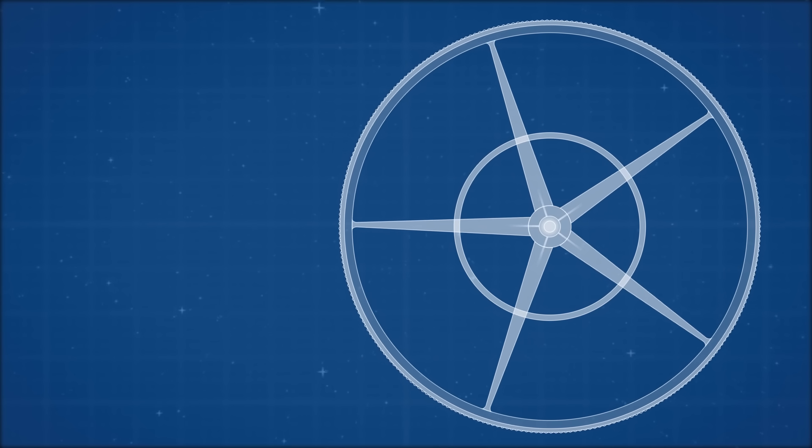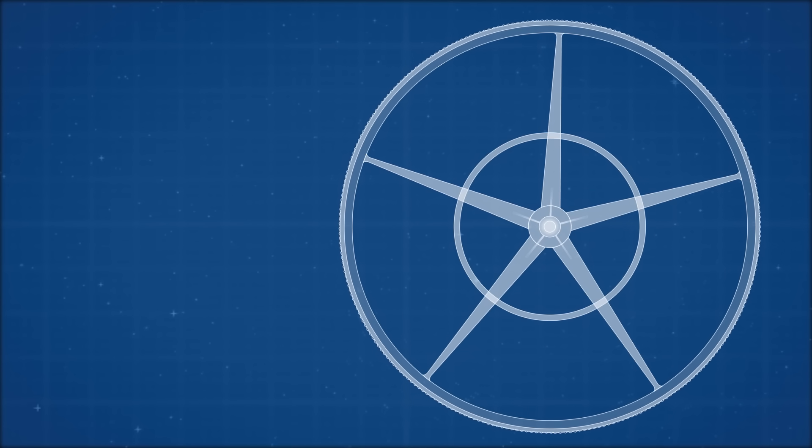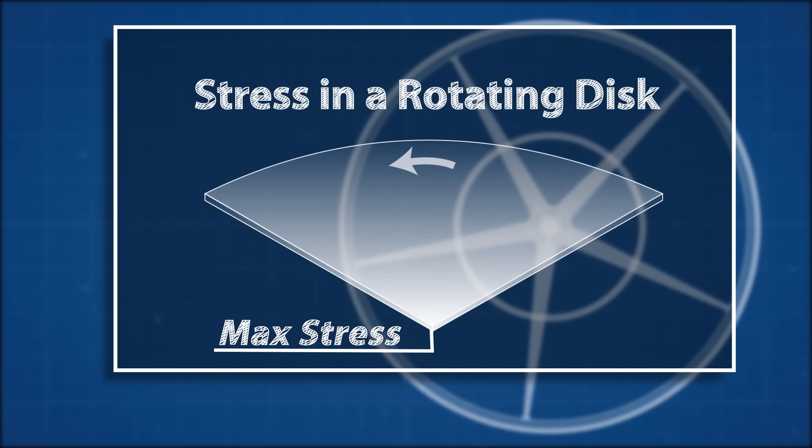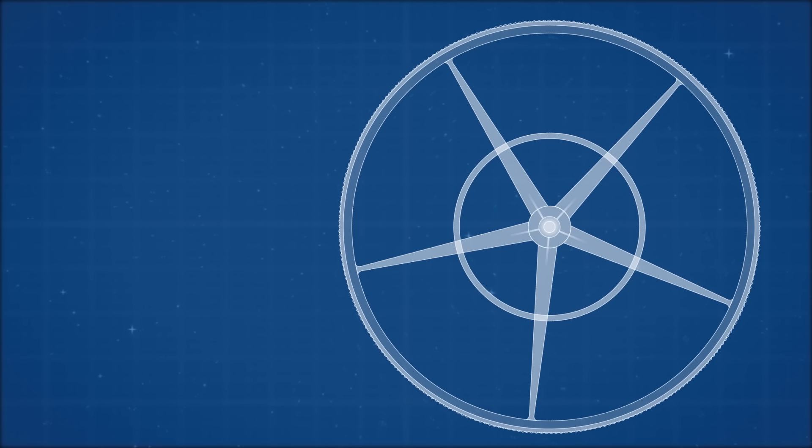It's interesting to note that the designers of Elysium took note of this. The stress in spinning structures like this would decrease as you move away from the rotational center. This means it would need a stronger structure the closer you get to the center. This clearly influenced their design with these tapering spokes.